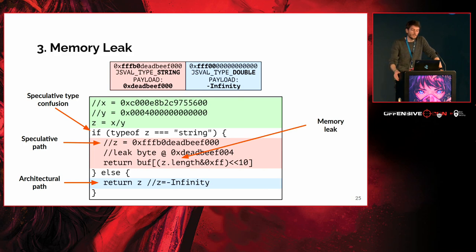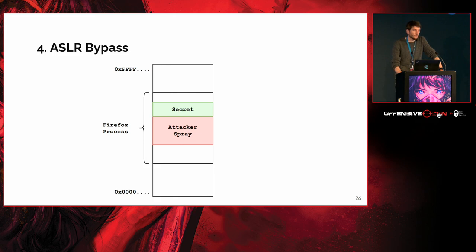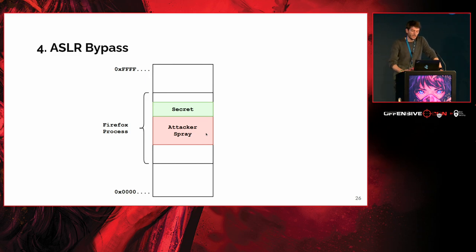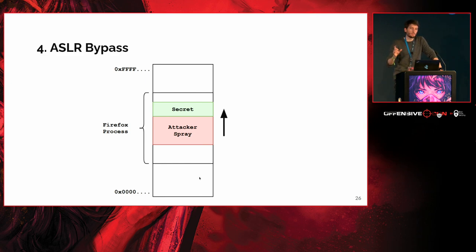We use a flush+reload side channel to leave a trace we can later observe to leak memory content pointed to by the crafted pointer. To bypass ASLR, we allocate a large chunk of memory — one gigabyte — spray it with all A's, then leak at coarse-grained addresses until we find all A's. Since all this execution is speculative, even accessing unmapped addresses doesn't crash Firefox — nothing is committed, so we can spray memory and read whatever we want without crashing anything.